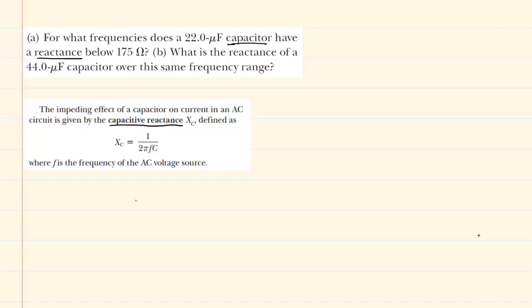So basically, we want X subscript C to be less than 175 ohms, as indicated in the question. This value, X sub C, capacitive reactance, is given by the following equation. So we can replace X sub C with 1 over 2 pi times frequency times capacitance. And again, this is less than 175 ohms.